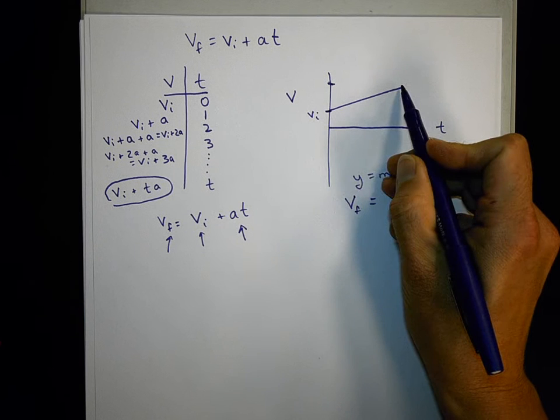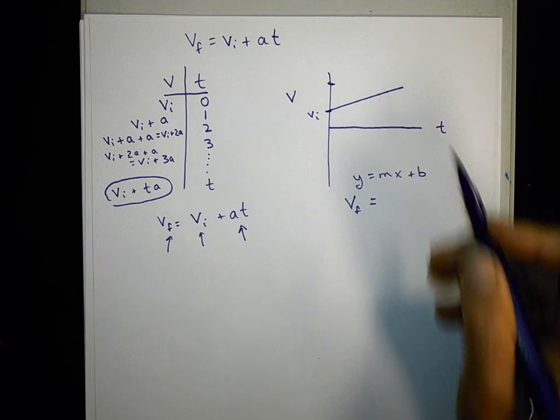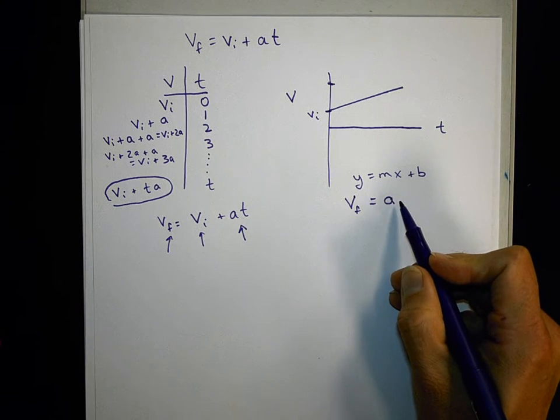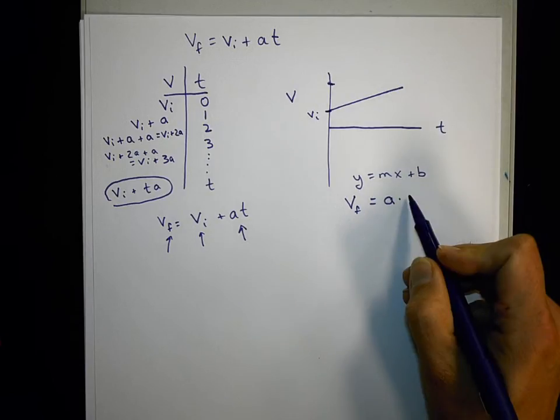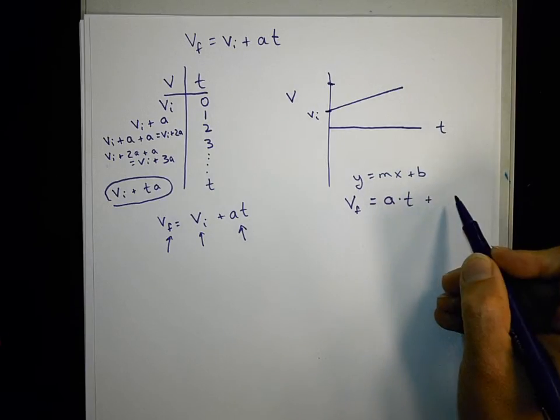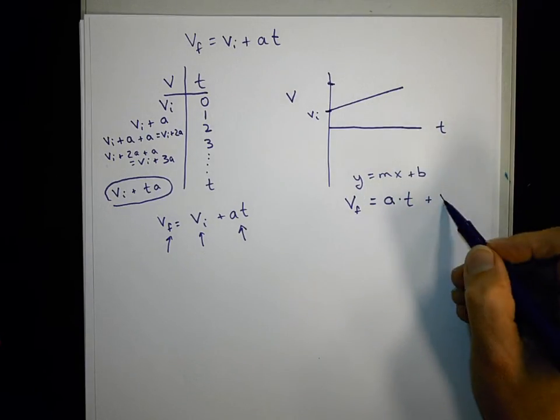What's M? M is the slope, and for a velocity graph the slope is A. What's X? In this case it's time. What's my Y intercept, my B? That's where I started, VI.